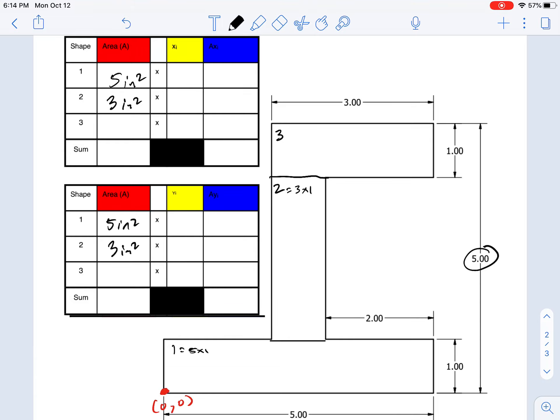And then this final shape is pretty easy to see. It's just 3 by 1, so that's 3 square inches, for a total of 11 square inches for the overall area of the shape.